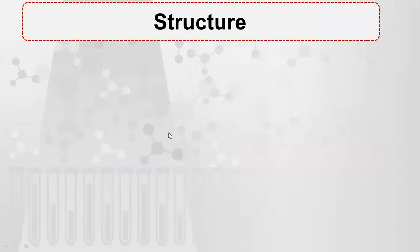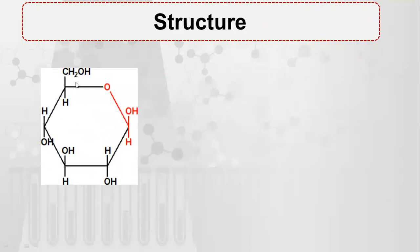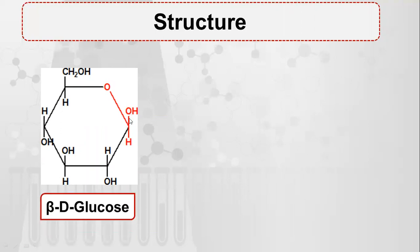If we look at this structure, this is beta-D-glucose. The anomeric carbon — carbon number one — has an OH group. Carbon number one and carbon number four undergo condensation to form the glycosidic bond, which is a beta-hemiacetal bond.